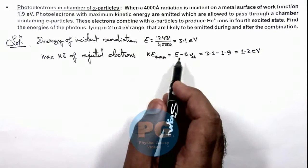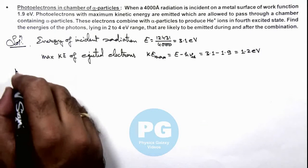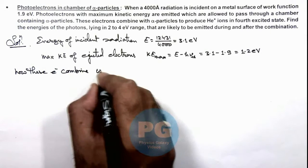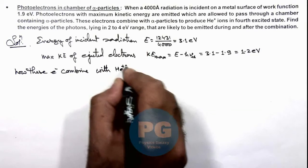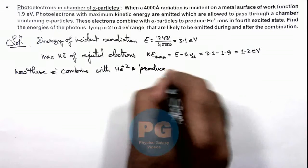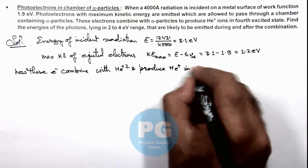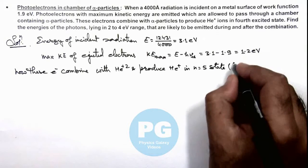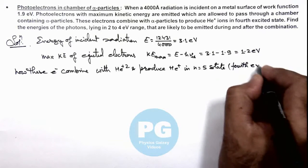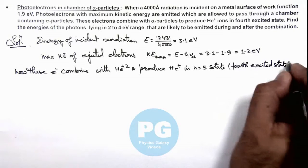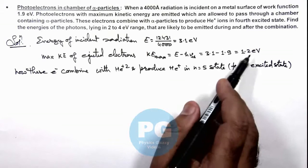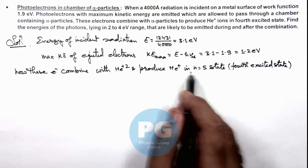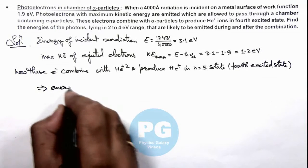Now these electrons, when combined with the alpha particles — that is He²⁺ — produce He⁺ in the 4th excited state, as we are given. The 4th excited state corresponds to n equals 5.